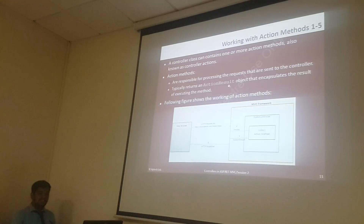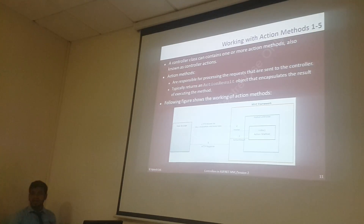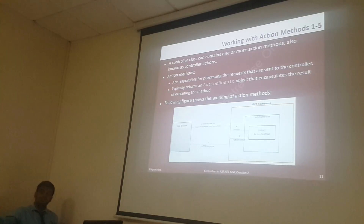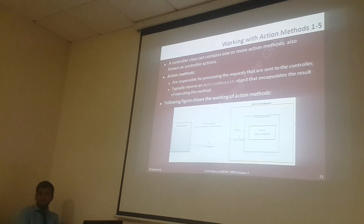And typically, an action method returns an ActionResult object that can capture the result of executing a method. In real time, every view method has a return type of ActionResult. They are calling different view pages, stable pages. That's why by default we call it ActionResult. But till here, we have returned strings actually.